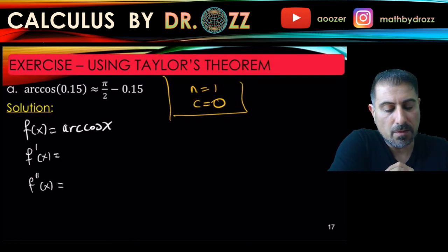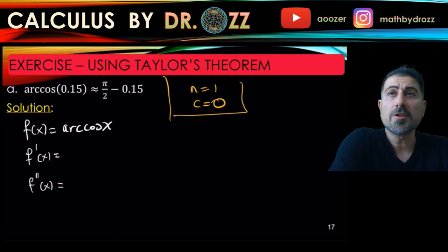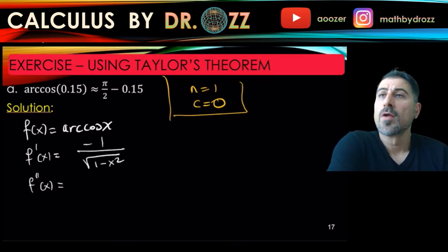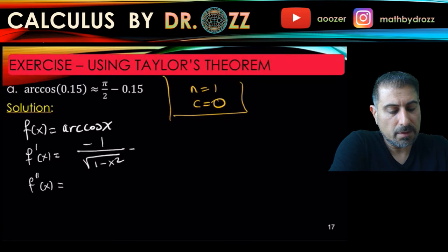And f double prime for R_1. So for P_1, I don't need f double prime, but for R_1 I need it. Use the differentiation formula for arccos, and it gives us that this is minus 1 over the square root of 1 minus x squared.